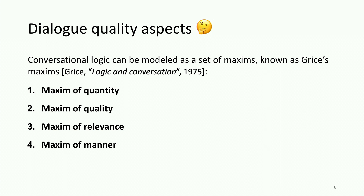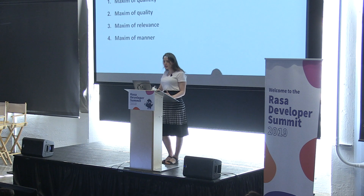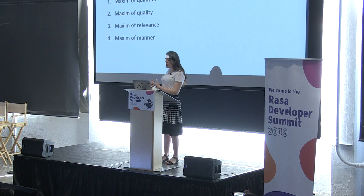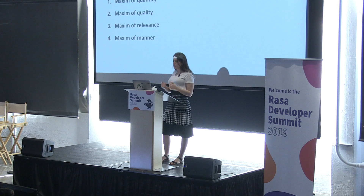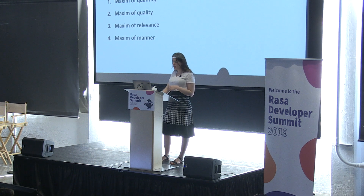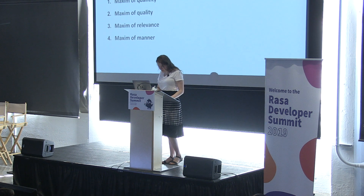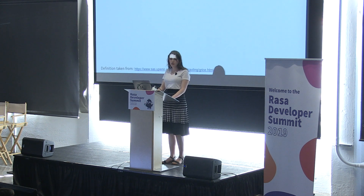Social psychology literature describes how people achieve effective conversational communication in common social situations. In particular, Paul Grice in 1975 proposed that conversational logic can be modeled as a set of maxims known as Grice's maxims. These maxims correspond to the maxim of quantity, the maxim of quality, the maxim of relevance, and the maxim of manner.